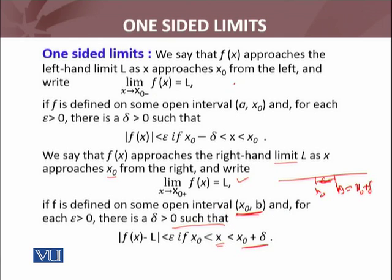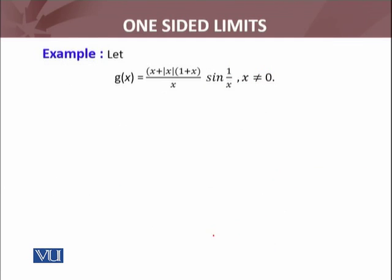Of course, the limit of f(x) as x → x₀ equals L only when the function approaches L from the left side and also approaches the same number L from the right side. As we have seen in examples, it is not necessary that both sides approach the same number.